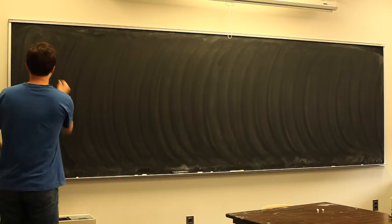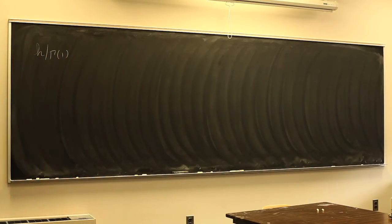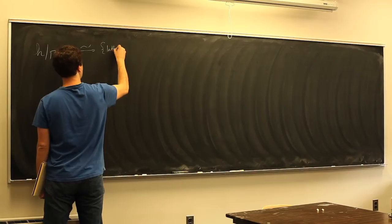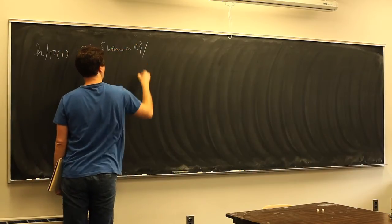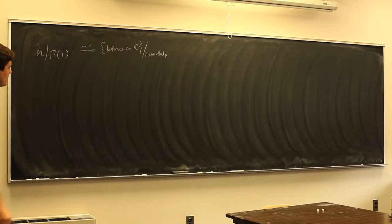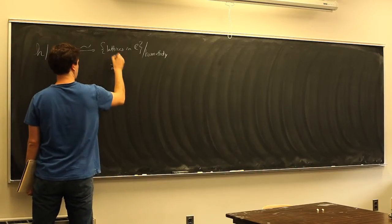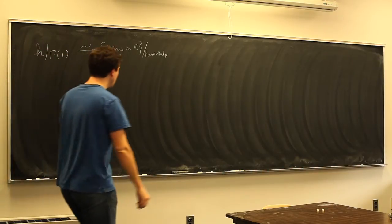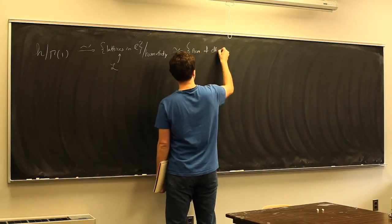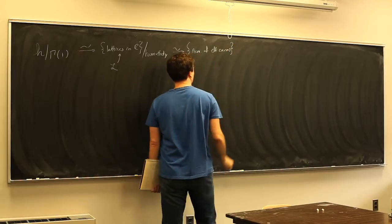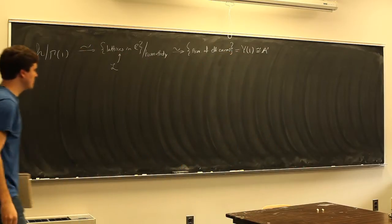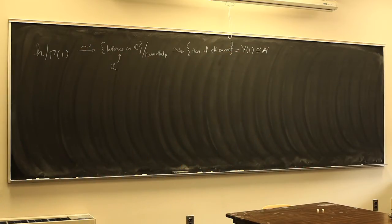We have this picture: the upper half plane mod Γ₁, where Γ₁ was just SL₂(ℤ). This was in bijection with the set of lattices in ℂ modulo homothety. I'm going to call the set of lattices in ℂ the script L, and I'll use it quite a bit. This was also in bijection with the set of isomorphism classes of elliptic curves.